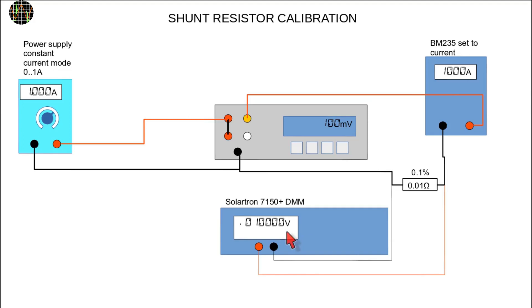With this method I can get a better accuracy than with the BM235 alone but of course you could use whatever reference instrument you have to verify that the current is exactly 1A.